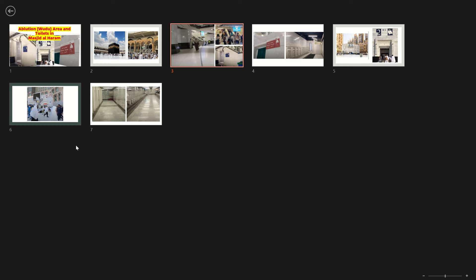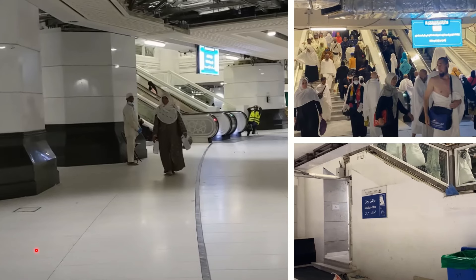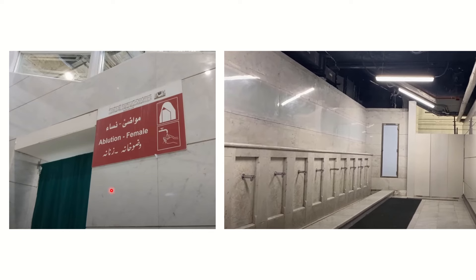And I can show you the picture as well — sorry about that — how the female one looks like. So female will have a poster like this — the red one. They have a color pattern as well: red color is kept for female, blue color is kept for male. And you can see it is clearly mentioned in English, so you cannot make a mistake. Also, in the female one, they usually have a curtain in front as well.